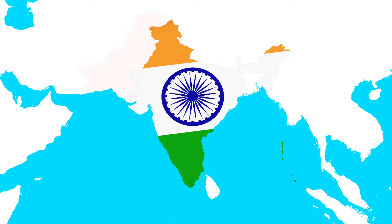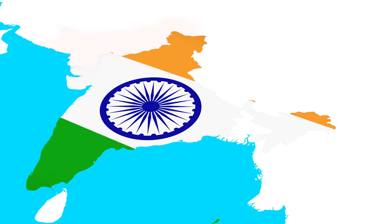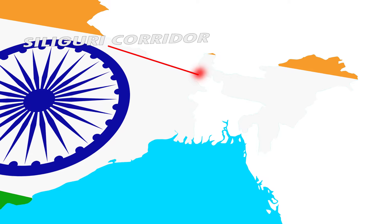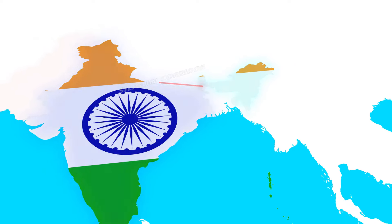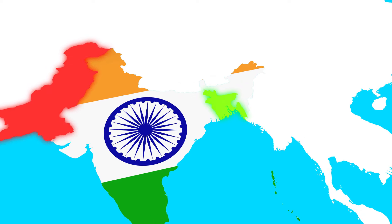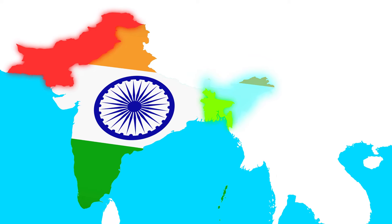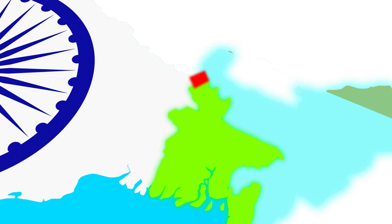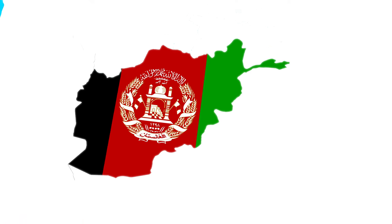Moving on to number two, we find ourselves in India, where most borders seem relatively conventional except for a peculiar arrangement in the east. This oddity is the Siliguri Corridor, a narrow strip of land connecting two regions of India. The corridor's origins can be traced back to the partition of India by the British in 1947, which separated west and east Pakistan. India was left with the northeastern region connected to the rest of the country through the slender Siliguri Corridor, which at its narrowest point is a mere 27 kilometers (17 miles) wide.